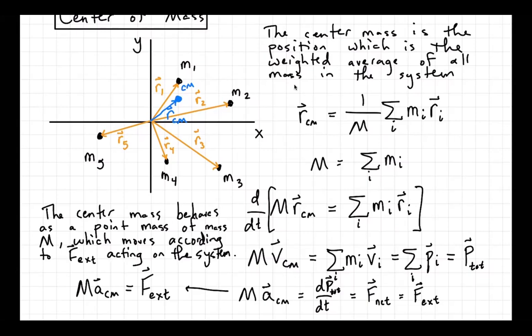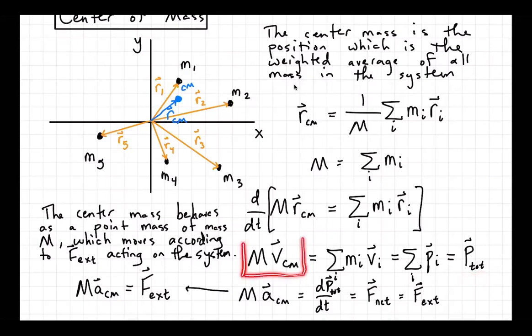A couple of things to note here. If there is no external force on the system — so if there are only internal forces acting between the masses — then the center of mass has a constant velocity. No matter what's happening with the individual particles, if there's no external forces, the center of mass will maintain its velocity, and the total momentum of the system will be constant. This adds to what we already knew about conservation of momentum: the total momentum being constant means the center of mass moves with constant velocity.